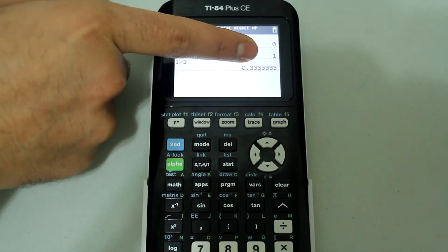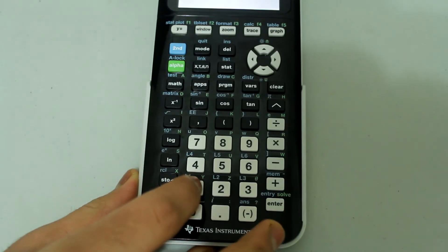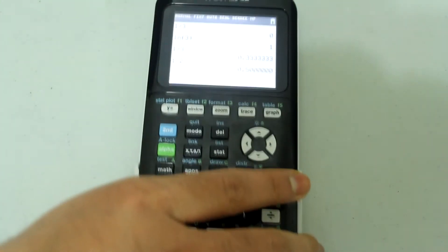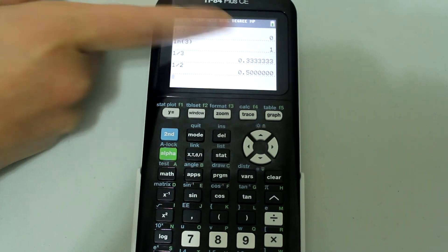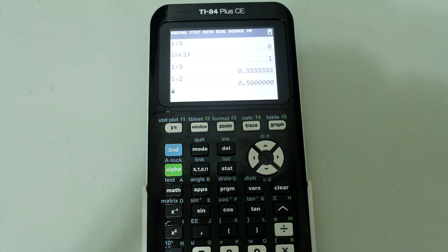So right now, we got 7 decimal places. But if we did something like 1 divided by 2, enter, notice we still get 7 decimal places, even though we don't need it. So to fix this,